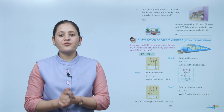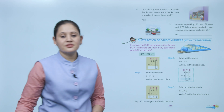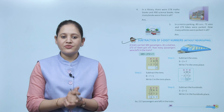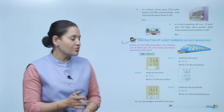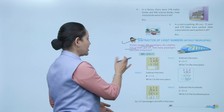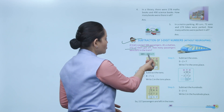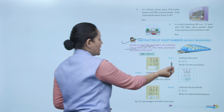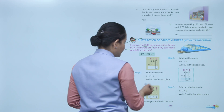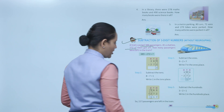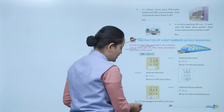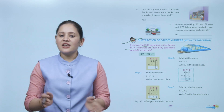Next is subtraction of three-digit numbers without regrouping. A train carried 389 passengers; at a station 272 of them got off. How many passengers were left? We calculate 389 minus 272. Ones: 9−2=7. Tens: 8−7=1. Hundreds: 3−2=1. So 117 passengers are left in the train.